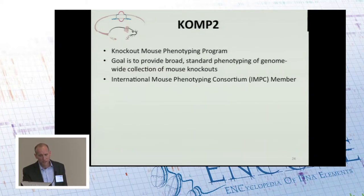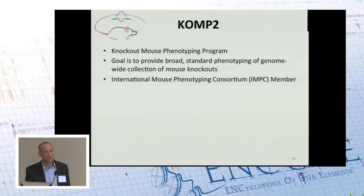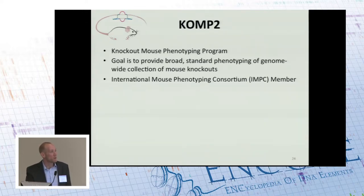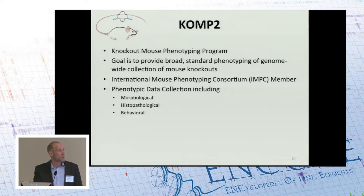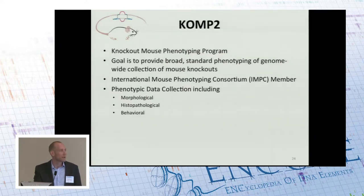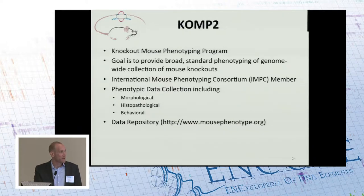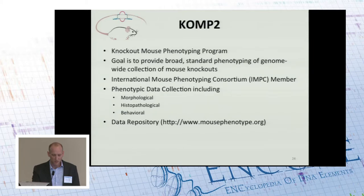Finally, I'm going to talk about a project that is fairly distantly related to the rest — the Knockout Mouse Phenotyping Program, or KOMP2. This is a Common Fund initiative, and the goal is to provide a broad set of standard phenotyping assays over a genome-wide collection of mouse knockouts. They're a member of the IMPC, the International Mouse Phenotyping Consortium, and collect data types that are quite distinct from everything else: morphological data, histopathological data, as well as a number of behavioral assays. KOMP2 data can be accessed through the mousephenotype.org data repository.